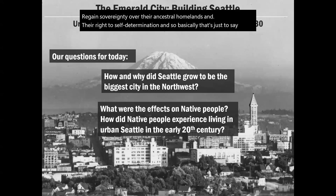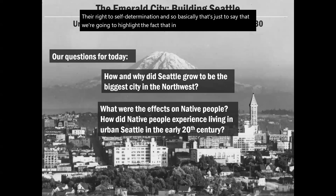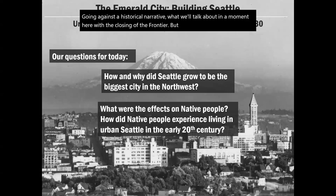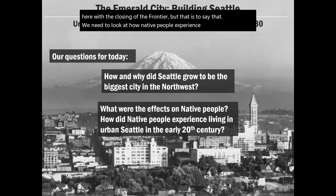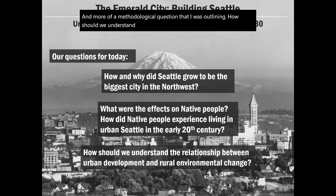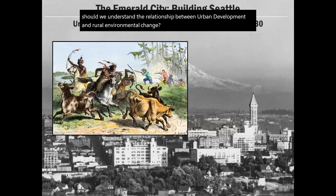We're actively going against a historical narrative — what we'll call the closing of the frontier — but more importantly we need to look at how Native people experienced living in urban Seattle in the early 20th century. And a more methodological question: how should we understand the relationship between urban development and rural environmental change?